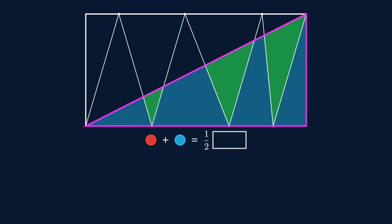This triangle is exactly half of the rectangle. So green plus blue is also half of the rectangle.